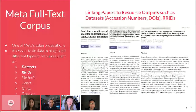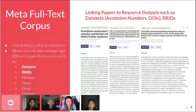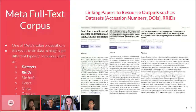Hi everyone. My name is Anna Maria, and I will be talking about some of the machine learning work we've been doing to extract mentions of different types of resources from full text. One of Meta's value propositions is the amount of full text papers we ingest directly from publishers, and that allows us to do data mining for entities such as datasets, RIDs, methods, genes, drugs, and diseases. For today, I'll focus on datasets and RIDs and the way in which we are able to link them to papers in our knowledge graph.